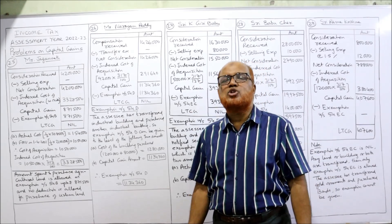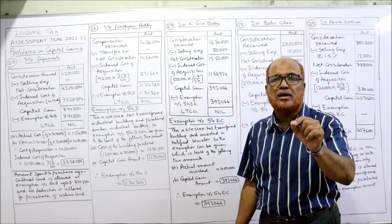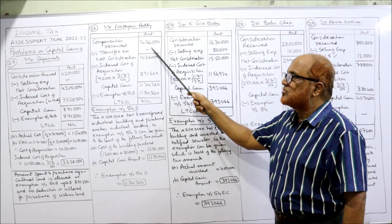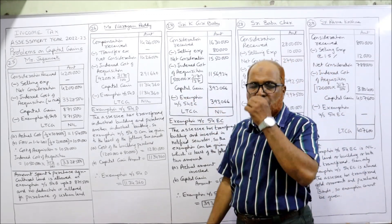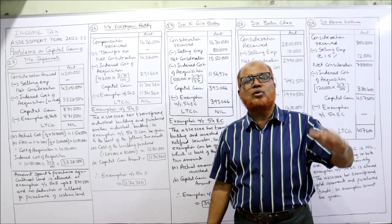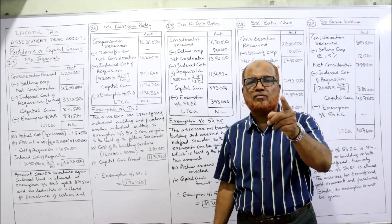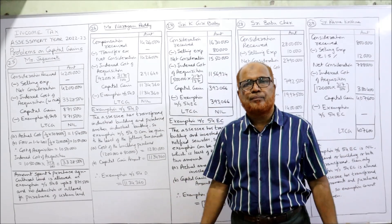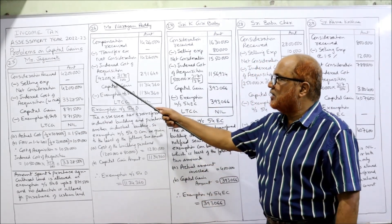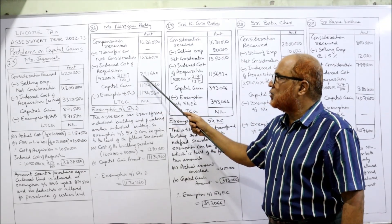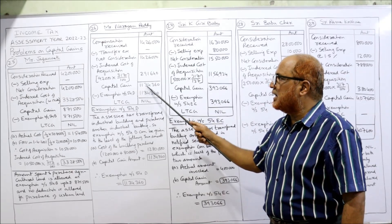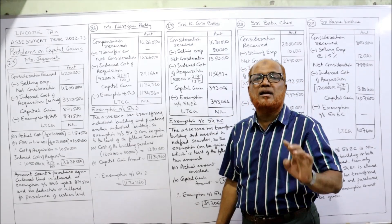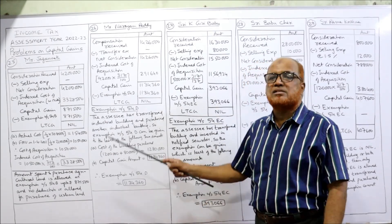Since an industrial building was compulsorily taken over by the government and the assessee purchased another industrial building with the proceeds, exemption is allowed under Section 54D. Compensation received from the government is 14 lakh 26,000; no transfer expenses, so net consideration is 14 lakh 26,000. For indexed cost of acquisition: the asset was purchased before 1/4/2001, so we choose higher of actual cost or FMV — but FMV is not given, so we take actual cost. Cost of the building was 92,000 × 317 / 100 = 2 lakh 91,640. Deducting gives capital gain of 11 lakh 34,360.